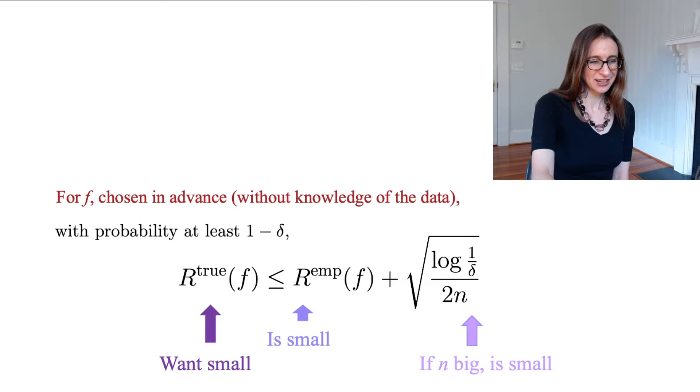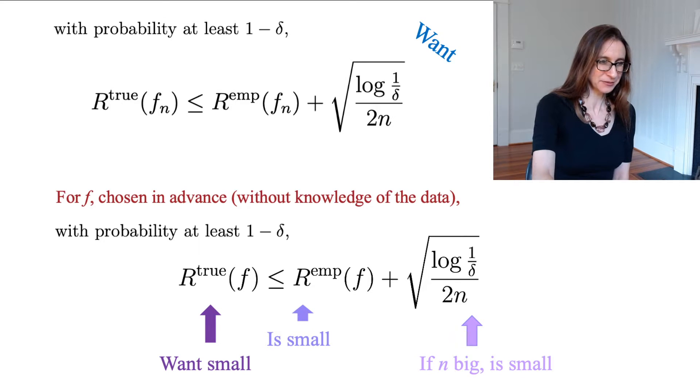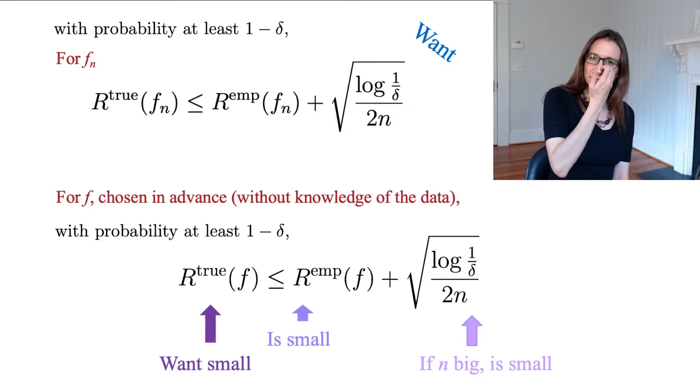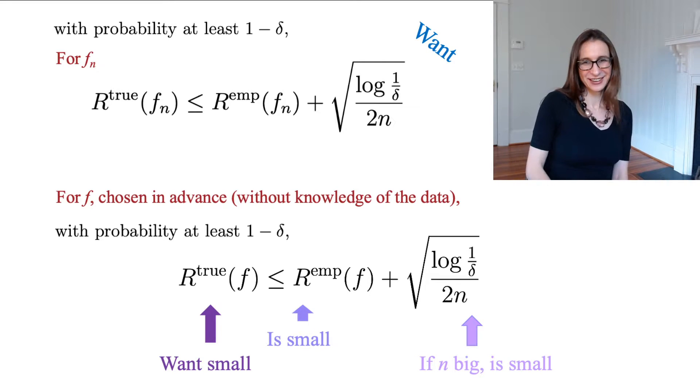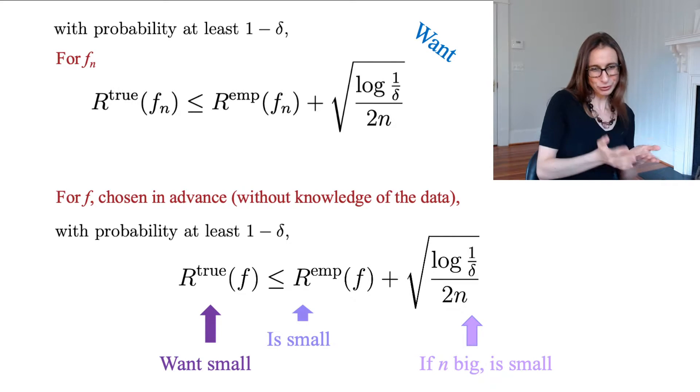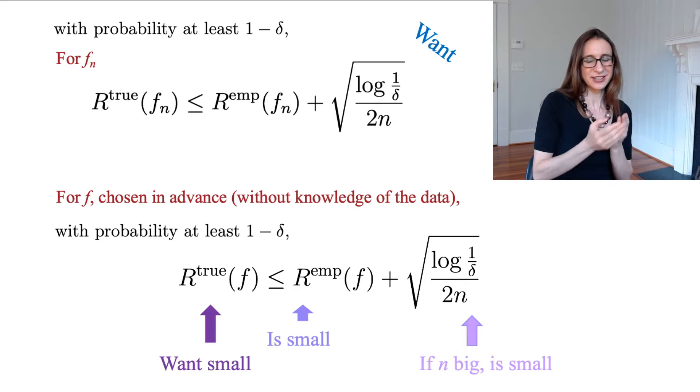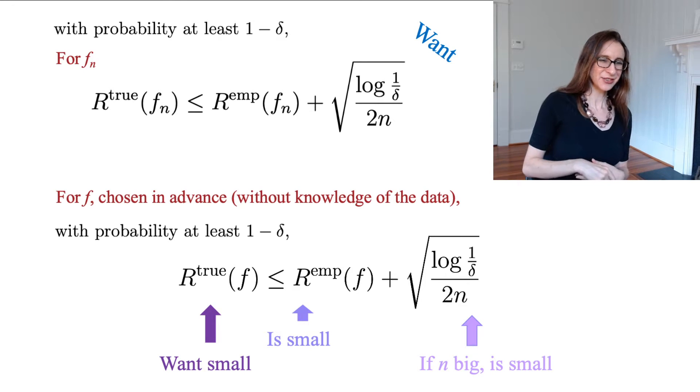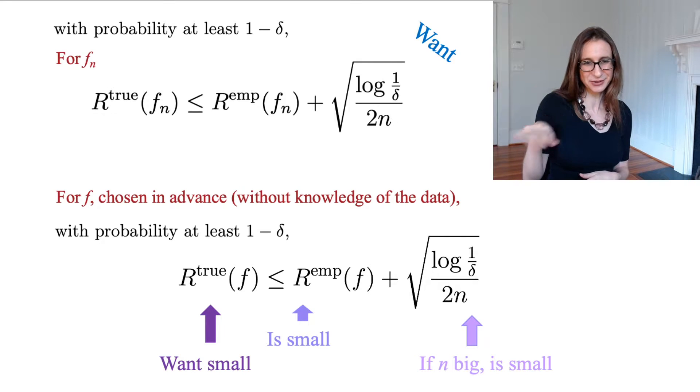So in fact, the truth is that the function f is a random variable. And so what we really want is that with high probability for fn, the function we chose after looking at the data, that we've got a handle on the true risk. So we want that with probability at least 1 minus delta for the function our algorithm is going to pick, the true risk of that function is less than the empirical risk plus some stuff. So then in that case, when we measure the things on the right-hand side, we know the thing on the left-hand side is small.